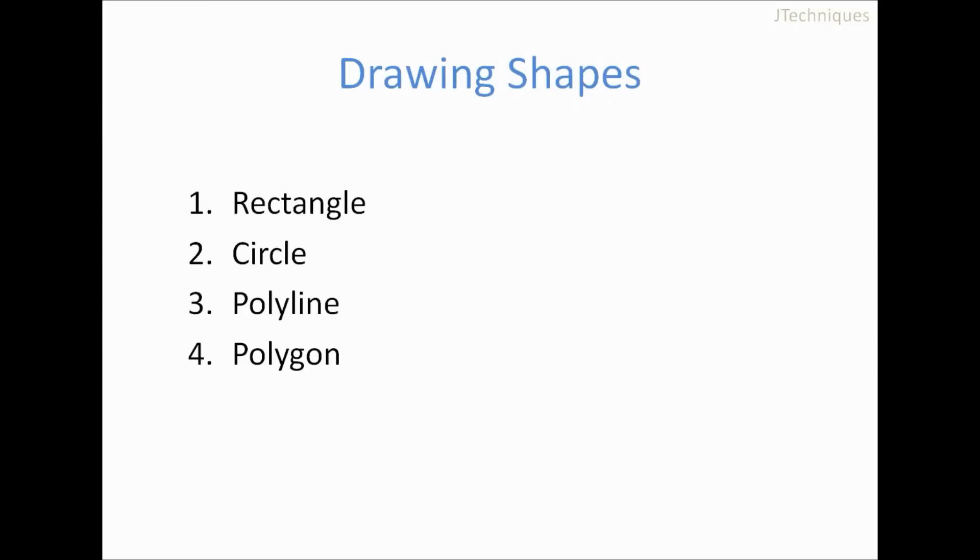There are four kinds of shapes that we can draw: rectangle, circle, polyline, and polygons. In this video we will look at rectangle and circle. In our next video we will have a look at polyline and polygons.